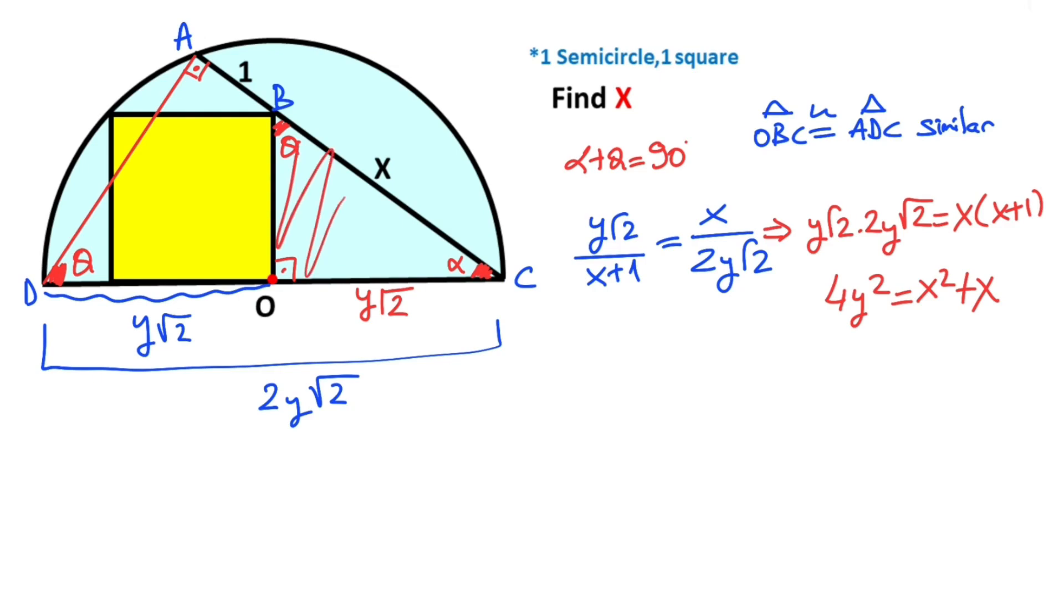After that, if you focus on this triangle, it's a right triangle, so we can apply the Pythagorean theorem. At the beginning we called here y, so y² + (y√2)² = x². Therefore, y² + 2y² = x², so 3y² = x².